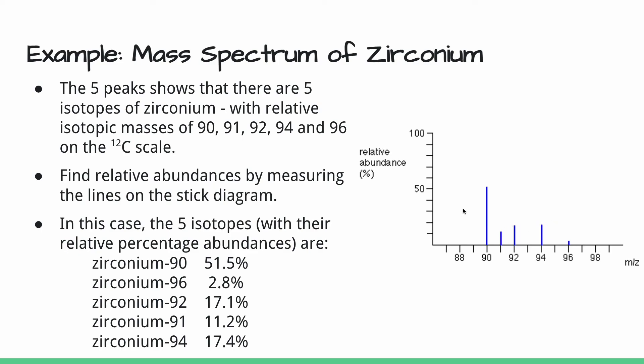Now that we've gotten the relative abundances from our mass spectrum, we can do our usual calculation to find the relative atomic mass of zirconium. That's it for this lesson, let's move on to our next task.